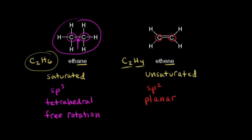But for ethene, if we look at those two carbon atoms, there's a double bond between those two carbons. We know that there's no free rotation around a double bond, so you're not going to get different conformations for ethene — no free rotation, no conformations. And that affects the structure of your alkenes.